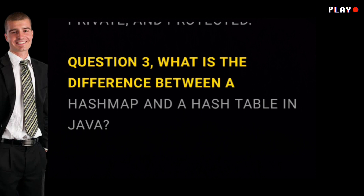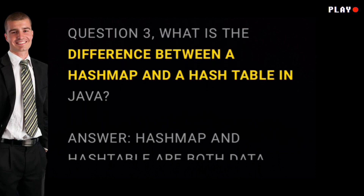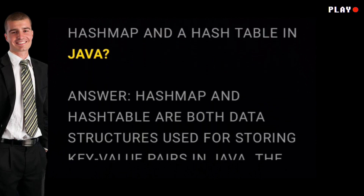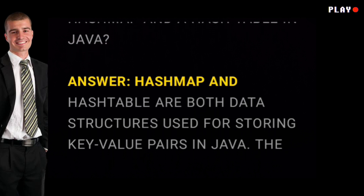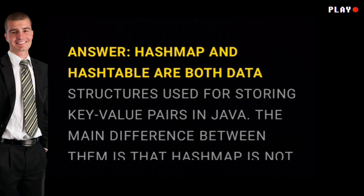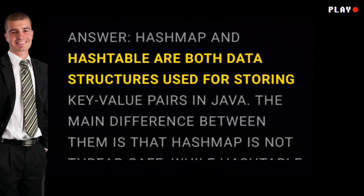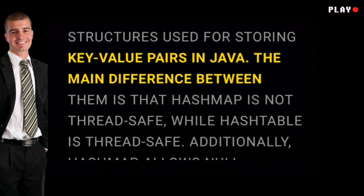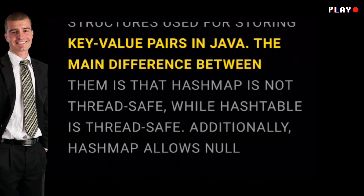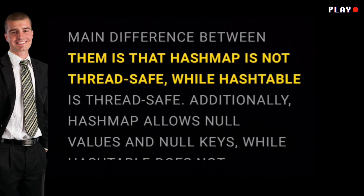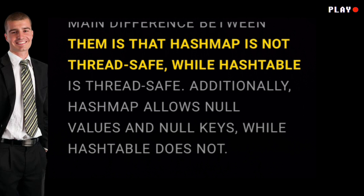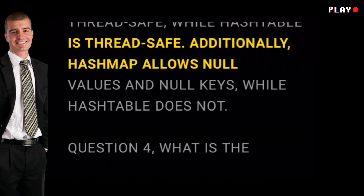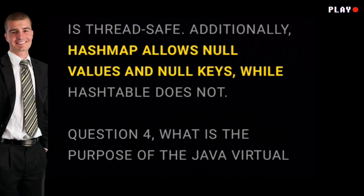Question three: what is the difference between a HashMap and a HashTable in Java? Answer: HashMap and HashTable are both data structures used for storing key-value pairs in Java. The main difference between them is that HashMap is not thread-safe, while HashTable is thread-safe. Additionally, HashMap allows null values and null keys, while HashTable does not.